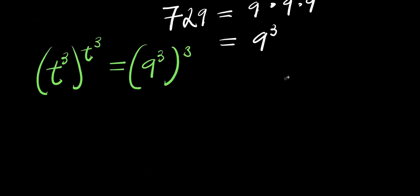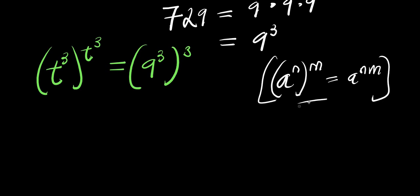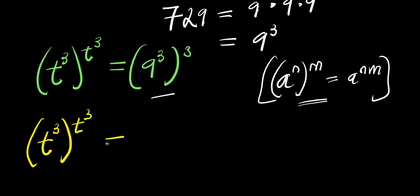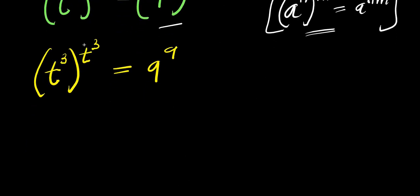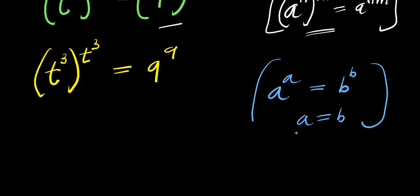So from here, remember: if you have a power n raised to the power of n, that equals a power n times n. Multiplying this out, I will have t power three raised to the power of t power three, equals nine power three raised to the power of nine. So if you have a to the power of a equals b to the power of b, that means a equals b. So you can have t power three equals nine.